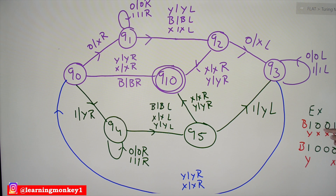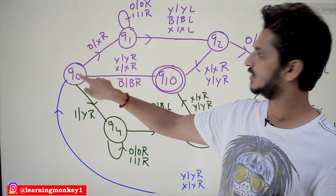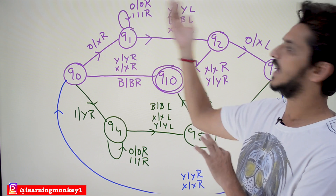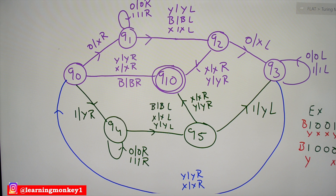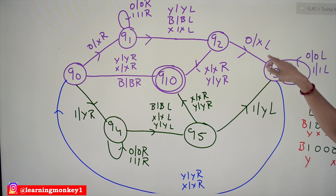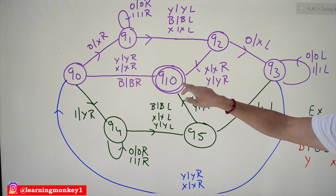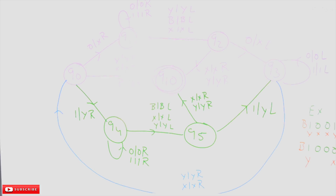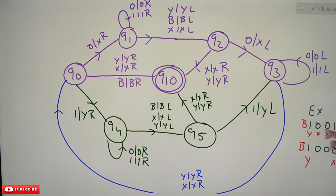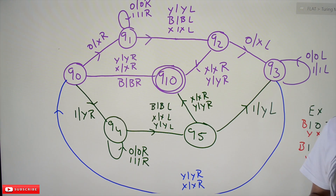Now we are at the second input position where there is zero. We are at state q0 — if you find zero, convert it into 'x' and move right. The same process repeats: we move up to 'y', move back, and convert the other zero into 'x'. After that, on q3 state, we check for 'x' and move to q0. Everything is now converted into 'x'. On q0, whenever we find 'x', it goes to q10 state and accepts the given input string.